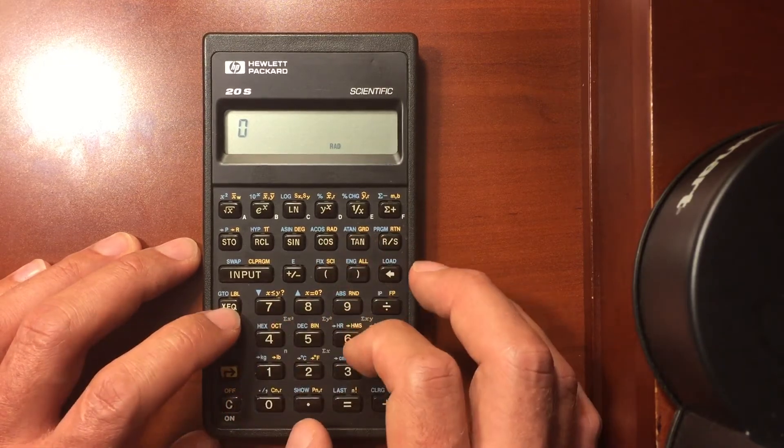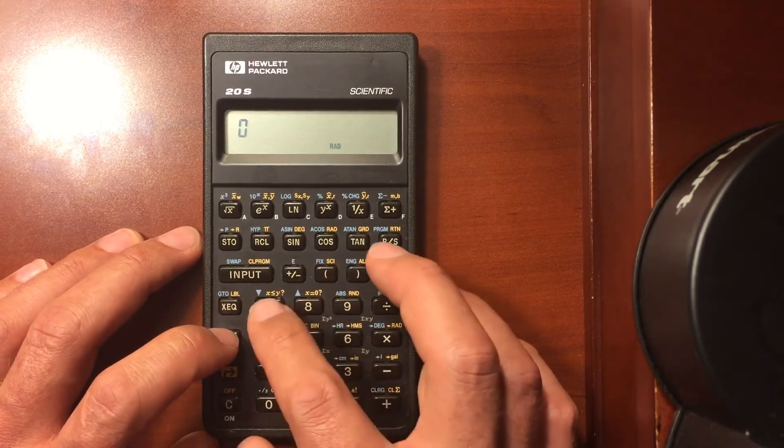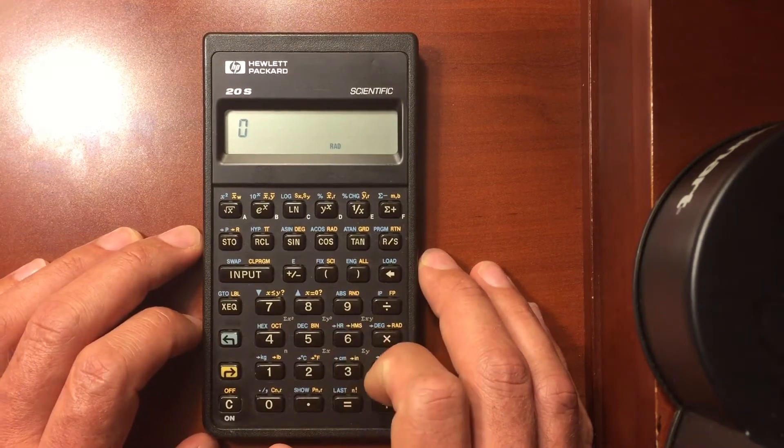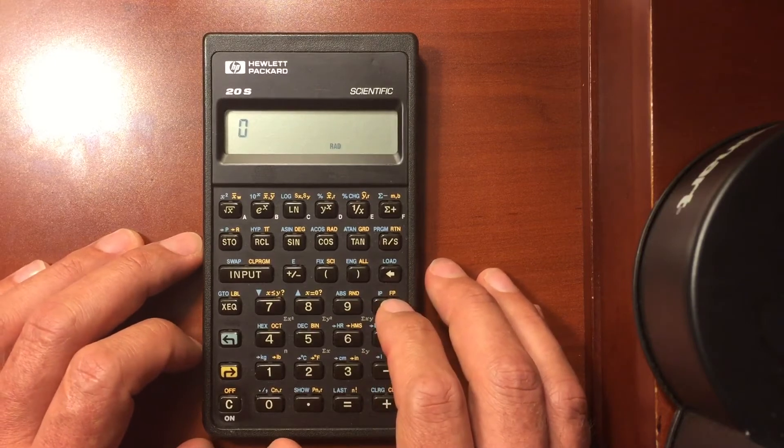Go to label. Those are programming functions. You can scroll up and down. Do comparisons. Find the absolute value of a number or round a number. Find the integer portion. Find the fraction portion.